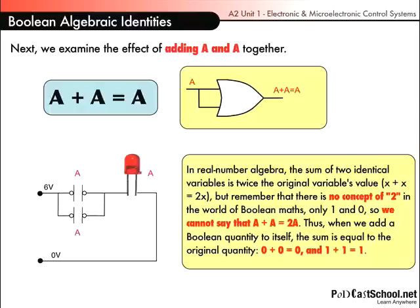Thus, when we add a Boolean quantity to itself, the sum is equal to the original quantity. So 0 plus 0, or 0 OR 0 equals 0. And 1 OR 1 equals 1. But both of those are fulfilled by this identity.